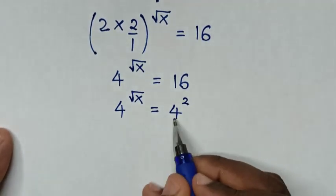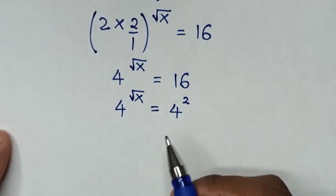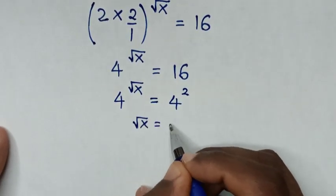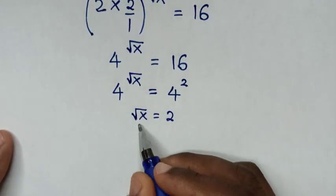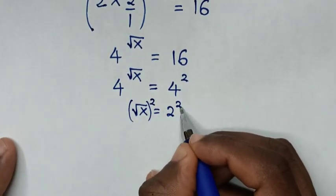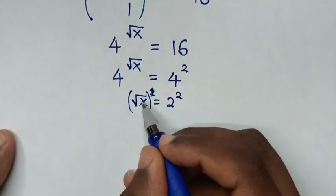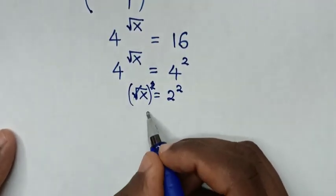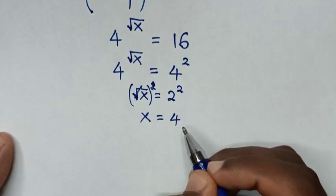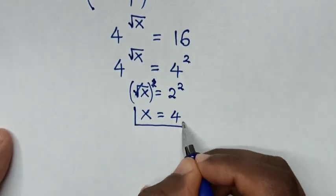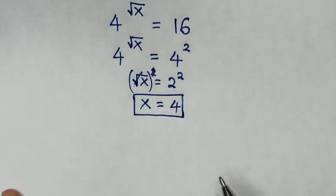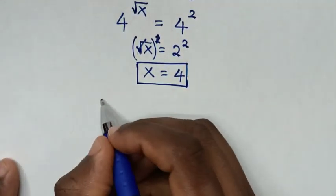Now we have the same base of 4 on both sides, so we will compare the powers. Then it will be: square root of x is equal to 2. To find the value of x, we square both sides. This square will cancel the square root. Then x is equal to 2 squared, which is 4. Therefore x = 4 is the final answer for this problem.